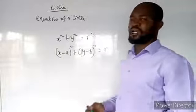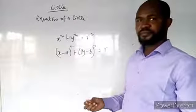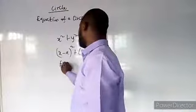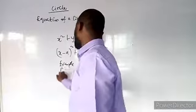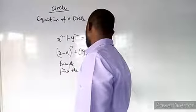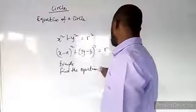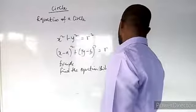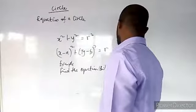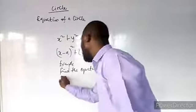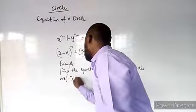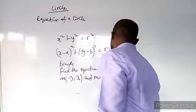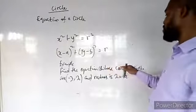So for example, if you are given a question like this: Find the equation whose center of circle are (-3, 2) and radius is 2 units. Find the equation whose center of circle are minus 3 and 2, and radius is 2 units.